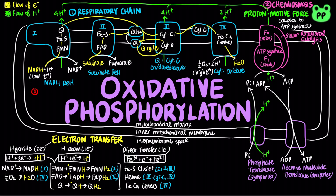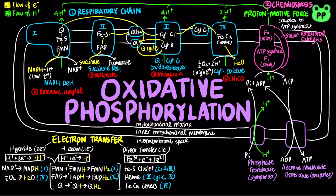Oxidative phosphorylation can be interfered with by various agents. Rotenone and amytal can prevent electron transfer from iron-sulfur centers to ubiquinone in complex 1. Malonate is a competitive inhibitor of succinate dehydrogenase. Antimycin A can block electron transfer from cytochrome B to cytochrome C1 in complex 3. Cyanide and carbon monoxide can inhibit complex 4. Oligomycin inhibits the rotor or F0 complex of ATP synthase.